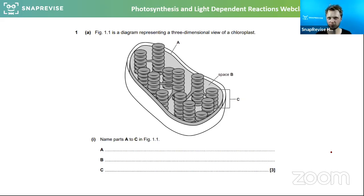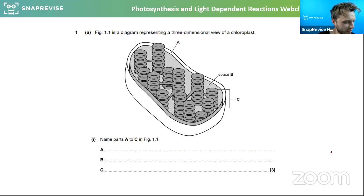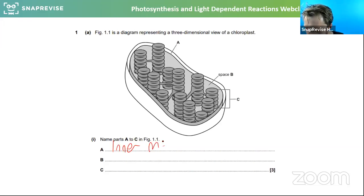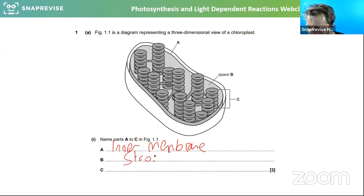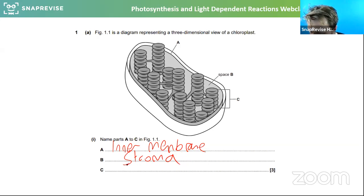Here is a question from a year 12 AS-level paper to test what you remember. Photosynthesis is endothermic — yes, it has to use energy. Label A is the inner membrane. B is the stroma — like the cytoplasm I just mentioned. And C is a single granum. If you said thylakoid you might possibly scrape a mark, but granum is correct.